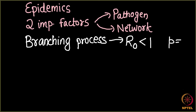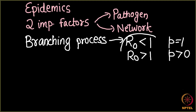When R0 is greater than one, the disease persists in the network with some positive probability. R0 was very helpful in telling us whether a disease is going to be an epidemic or not. Then we looked at two slightly more complicated spreading models: the SIR model and the SIS model.